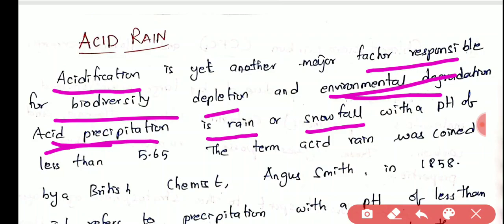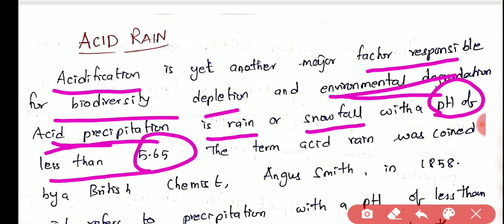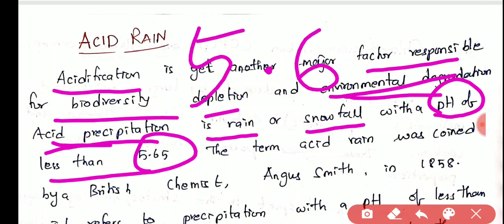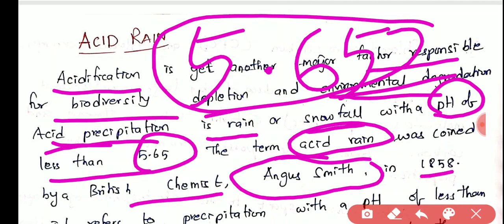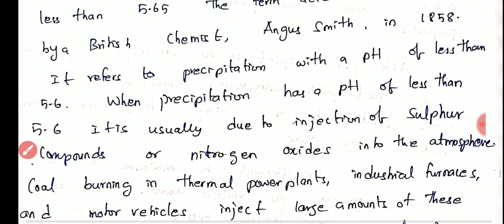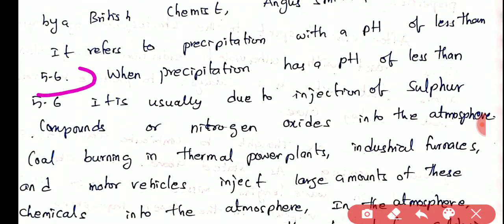Acid precipitation is rain or snowfall — acid rain is not particularly only a rain form but also it might be acid precipitation or snowfall. These acids combined with the falling rain or falling snow cause acid rain. We call rain as acid rain when its pH value is less than 5.65. This term acid rain was first coined by British chemist Angus Smith in 1858, and it refers to precipitation with a pH value less than 5.6.